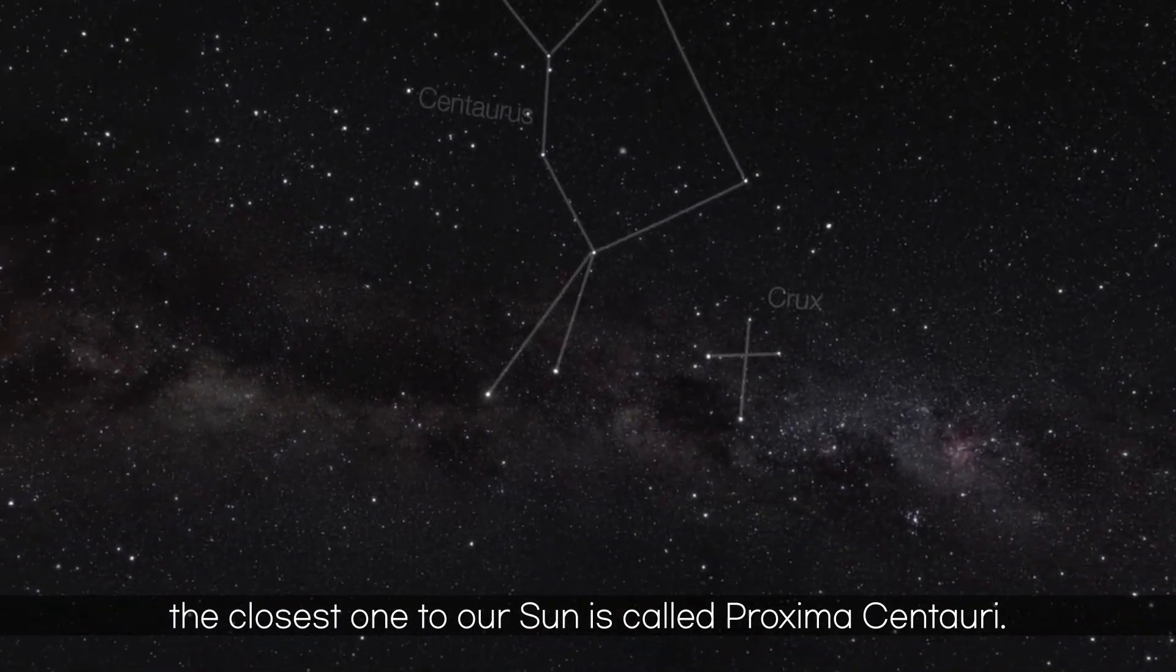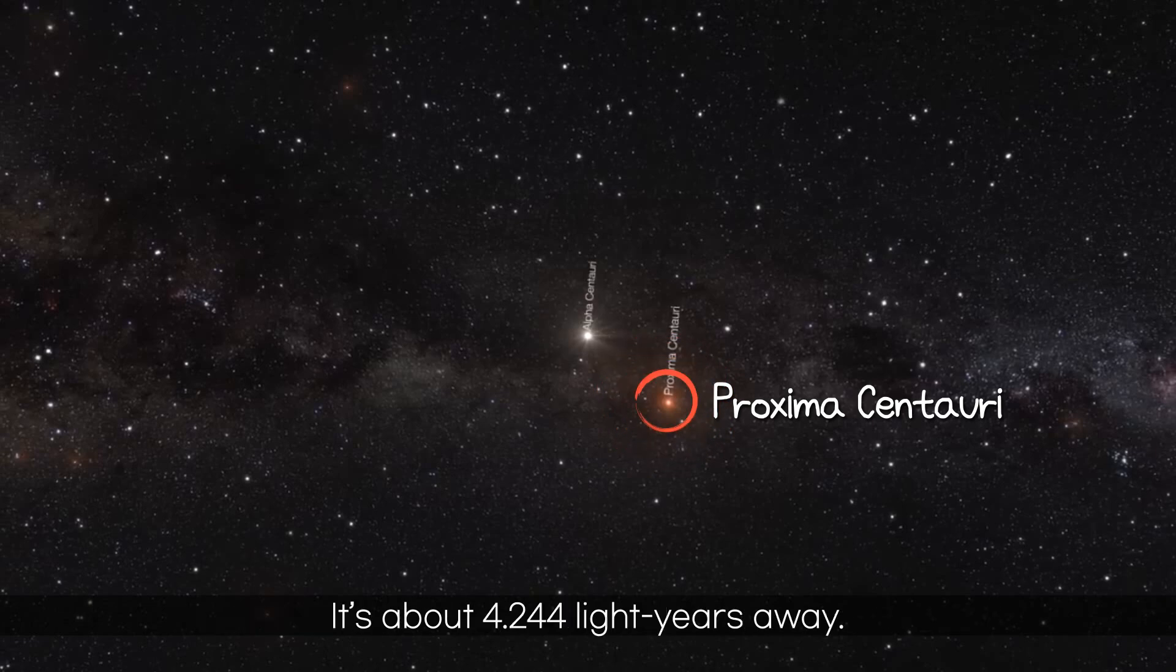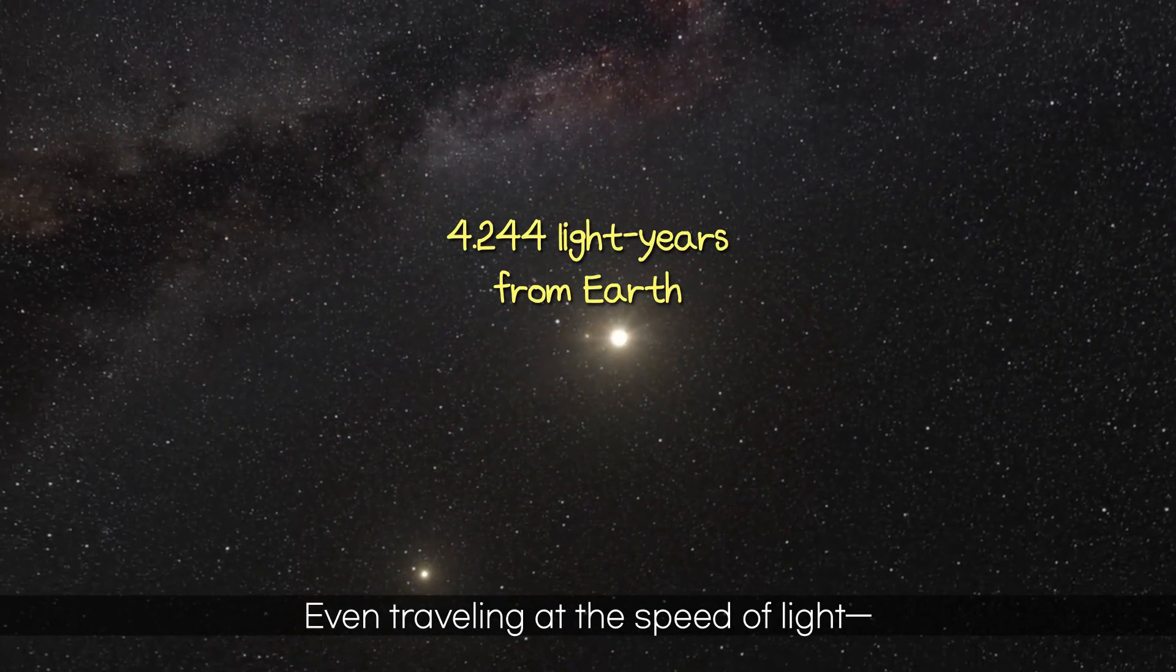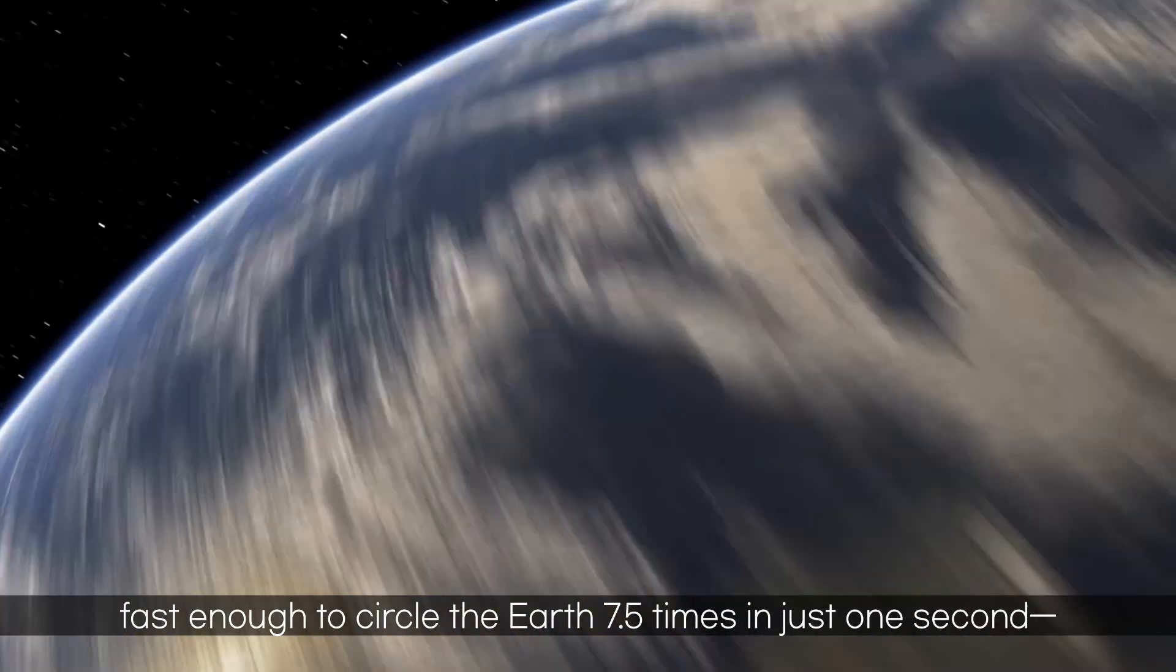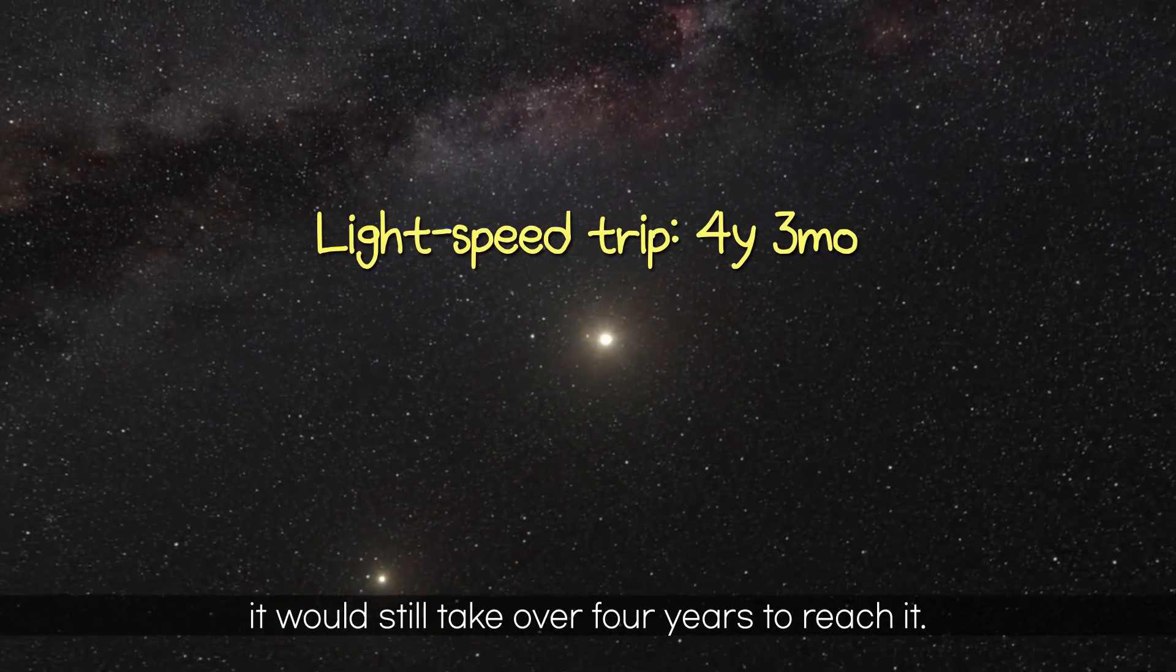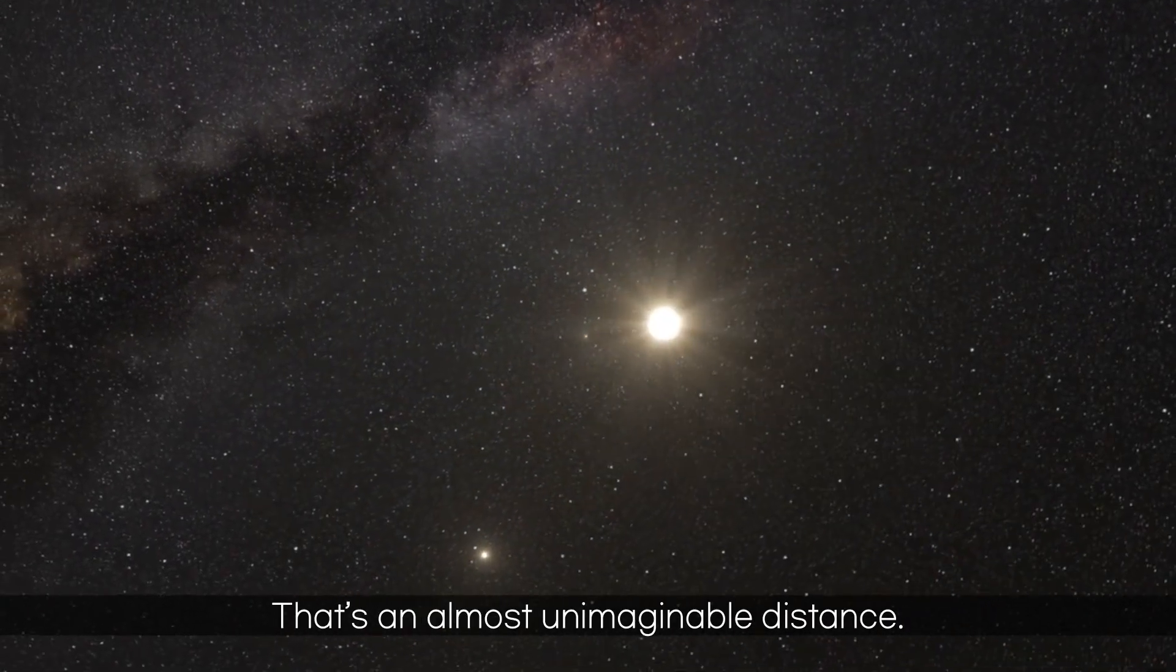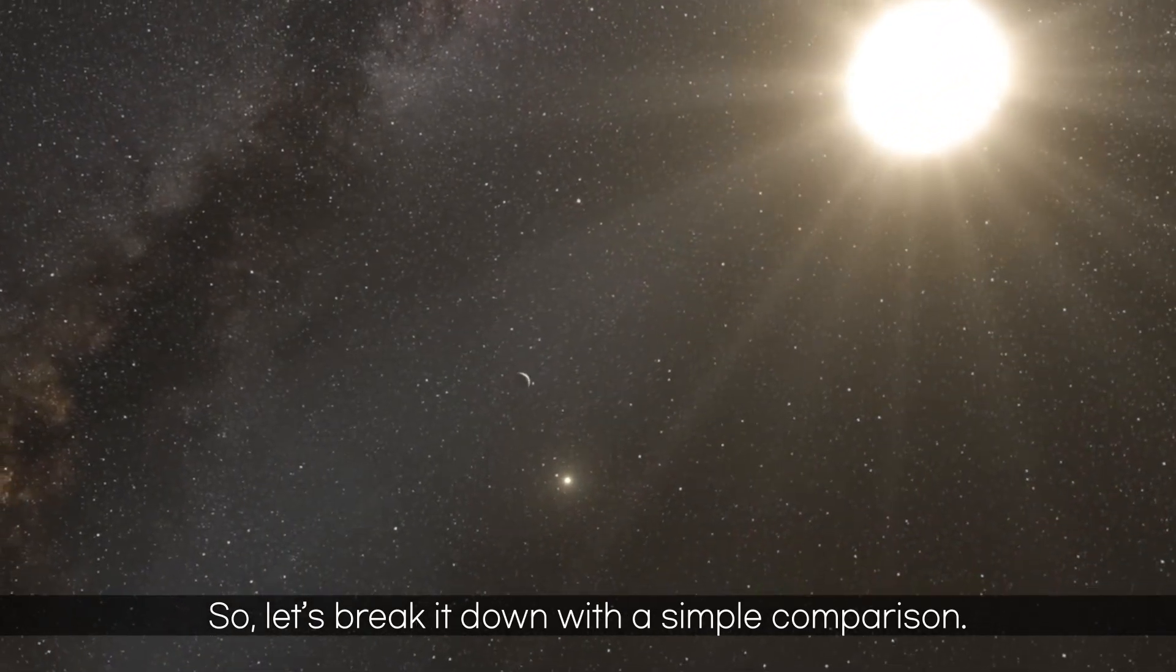Among all the stars in space, the closest one to our sun is called Proxima Centauri. It's about 4.244 light years away. Even traveling at the speed of light, fast enough to circle the Earth seven and a half times in just one second, it would still take over four years to reach it. That's an almost unimaginable distance.